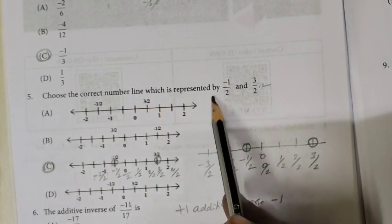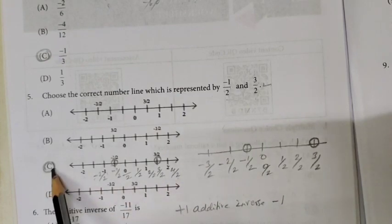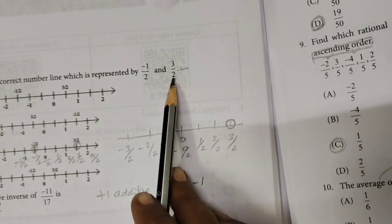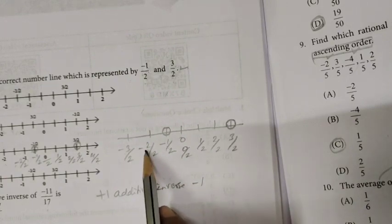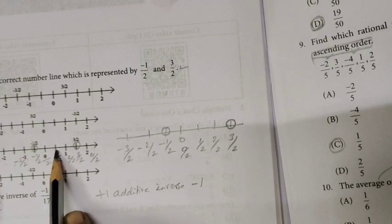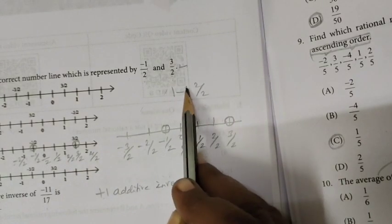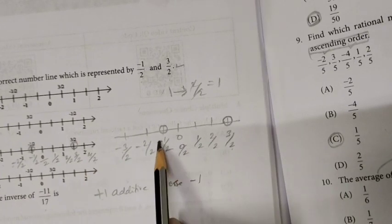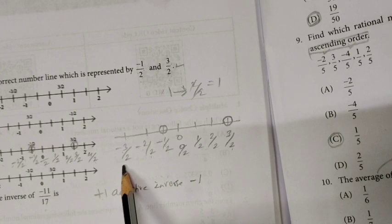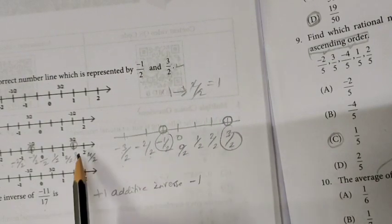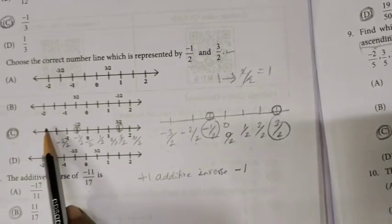Question 5: Choose the correct number line. There are 4 number lines given. The denominator is 2, so the number line shows: minus 3/2, minus 2/2, minus 1/2, 0, 1/2. We represent minus 1/2 on the number line. Option C is the correct one.